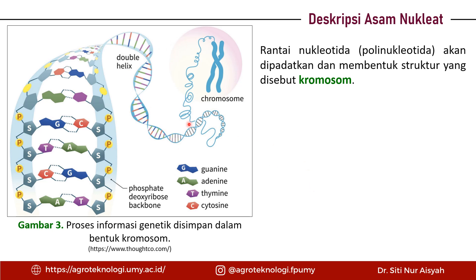Asam nukleat itu bentuknya seperti helix, double helix seperti ini. Asam nukleat disimpan dalam bentuk rantai nukleotida, jadi bukan satu pieces, tapi jumlahnya banyak sekali dan membentuk yang namanya rantai atau yang kita sebut sebagai polinukleotida. Karena tempat menyimpannya jauh di dalam inti sel, maka untuk menyimpan rantai nukleotida yang panjang itu dilakukan pemadatan.